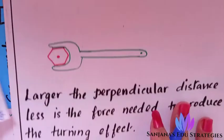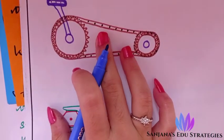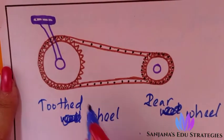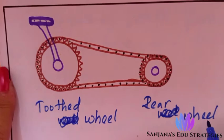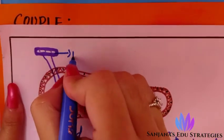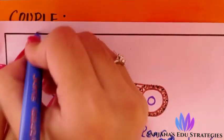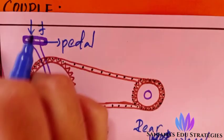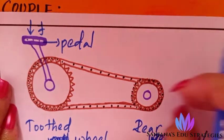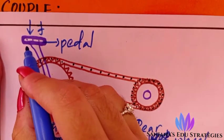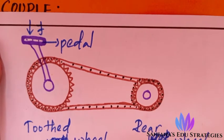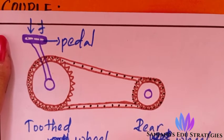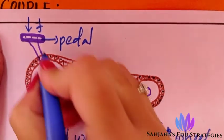Next, consider a bicycle's pedal wheel. The pedal is attached to the large front tooth wheel. We apply force on the pedal, which causes the chain and rear wheel to move — that's how a cycle moves. The perpendicular distance from the pivoted point to the pedal is large, so very little force is enough to ride the cycle.